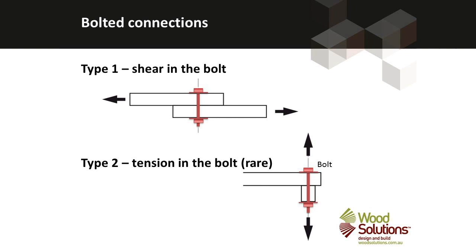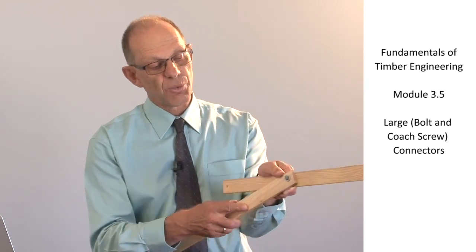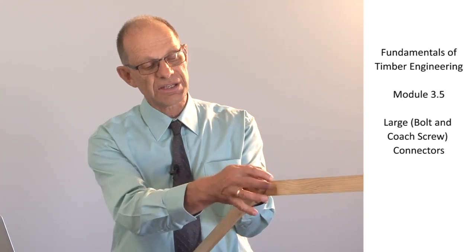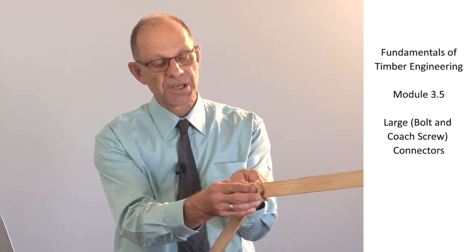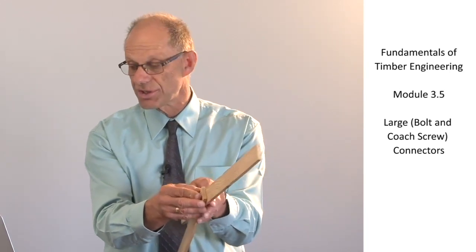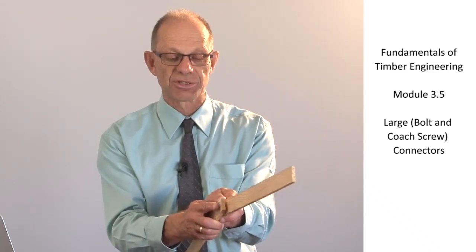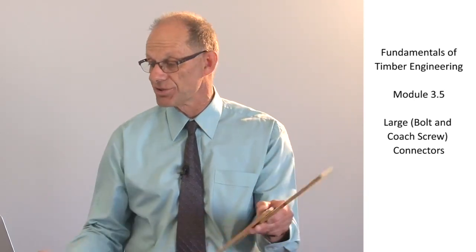A type 1 bolted connection will use shear in the connection to transmit load across a shear interface. So this is a type 1 connection where I am loading this member in tension and it's transferring load into this member using shear across the bolt shank. So that's a classic use of a bolt. A type 2 connection would have the bolt in tension and that's a much more difficult connection to establish using bolts.